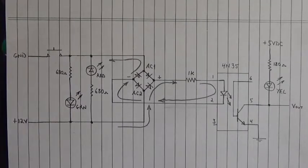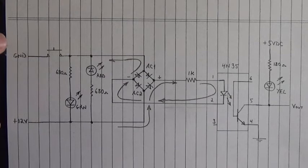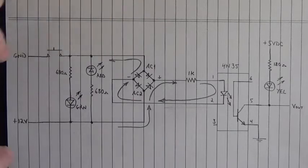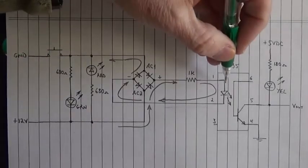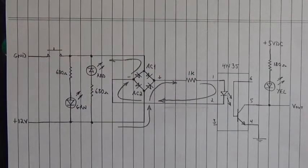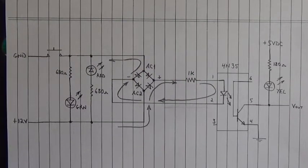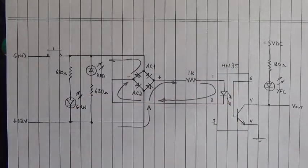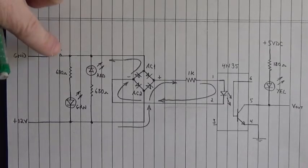Isn't that amazing? So the bridge rectifier corrects the polarity — the incoming polarity — regardless of whether it's 12 volts up here or ground up here, or 12 volts down here or ground down here. It corrects the polarity to the LED inside that optocoupler. So regardless of the polarity coming in, it will turn on this optocoupler when we push that on/off switch.